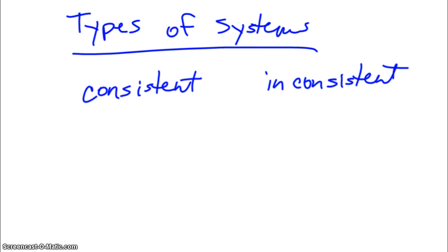If a solution is consistent, then that means there is at least one solution. And if it is inconsistent, that means there are in fact no solutions at all. And we're going to talk about what this means graphically in a minute. But if the system is consistent, then that has two separate types.